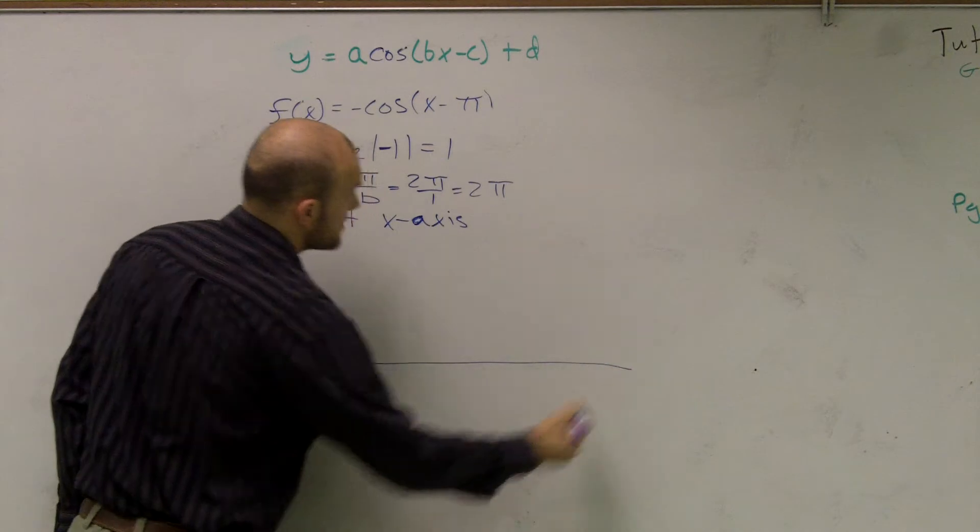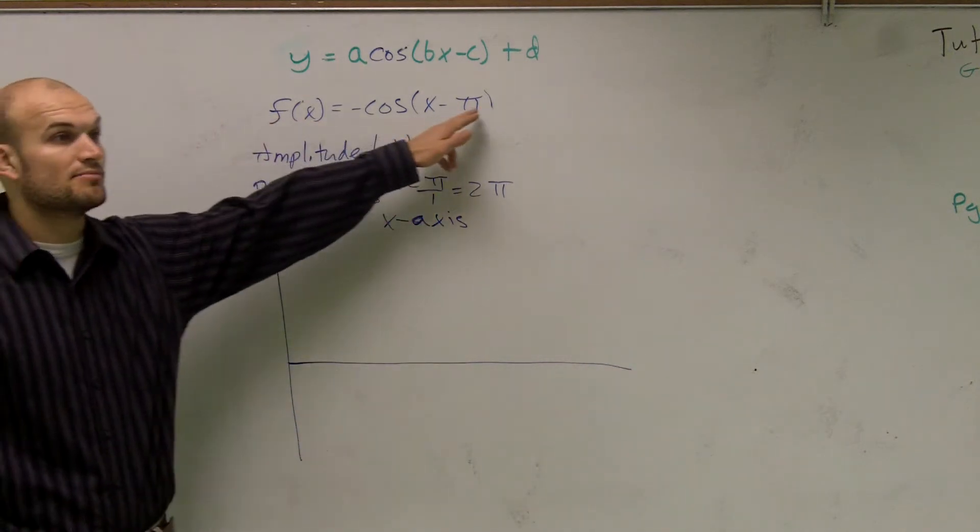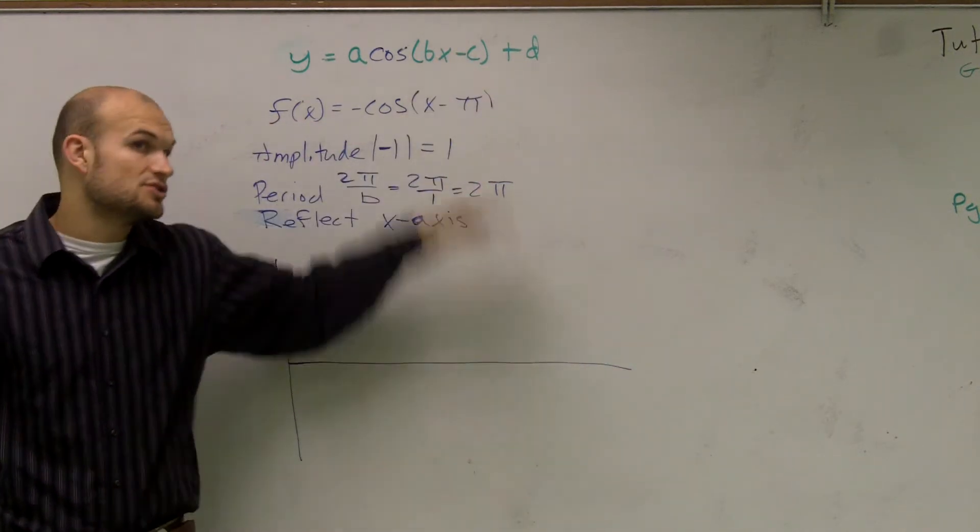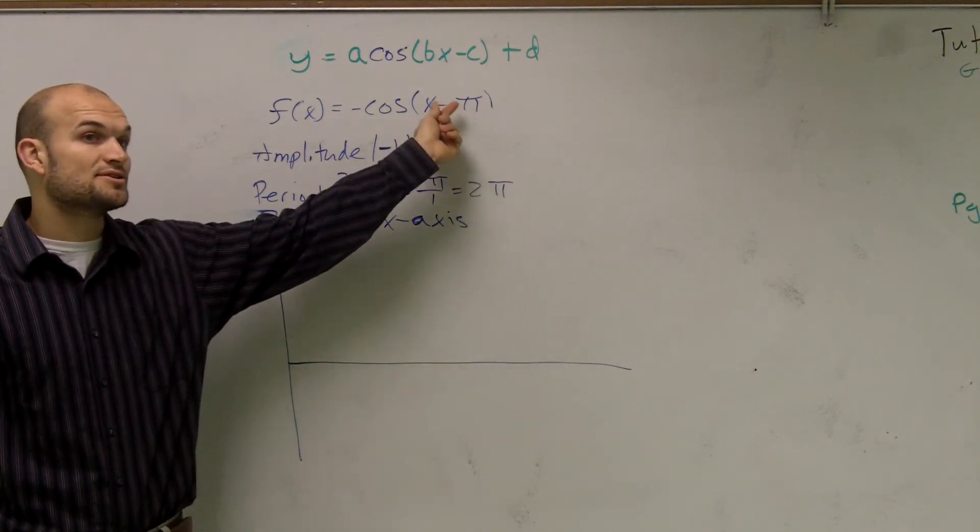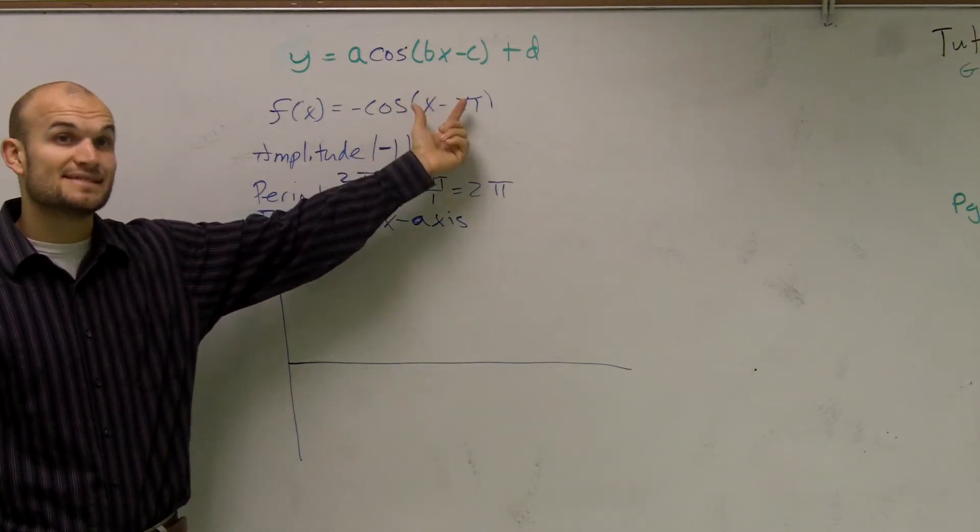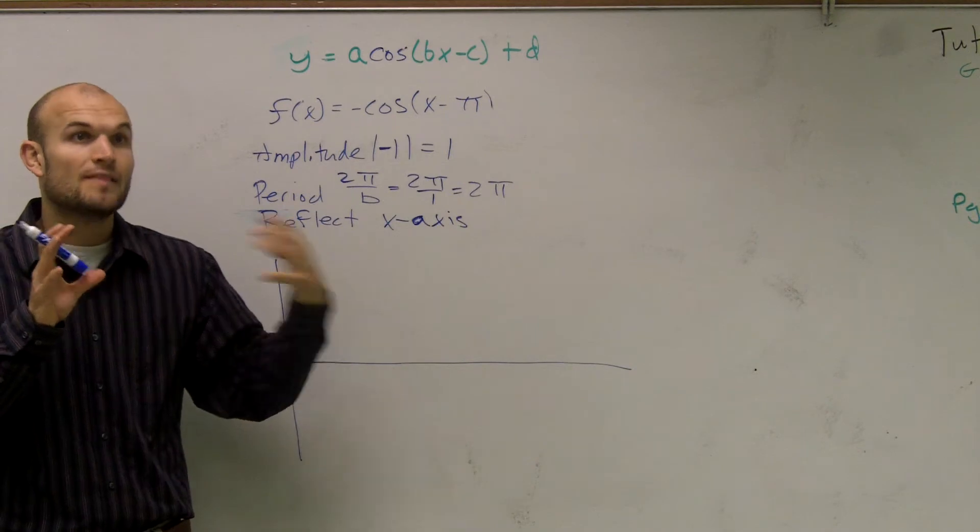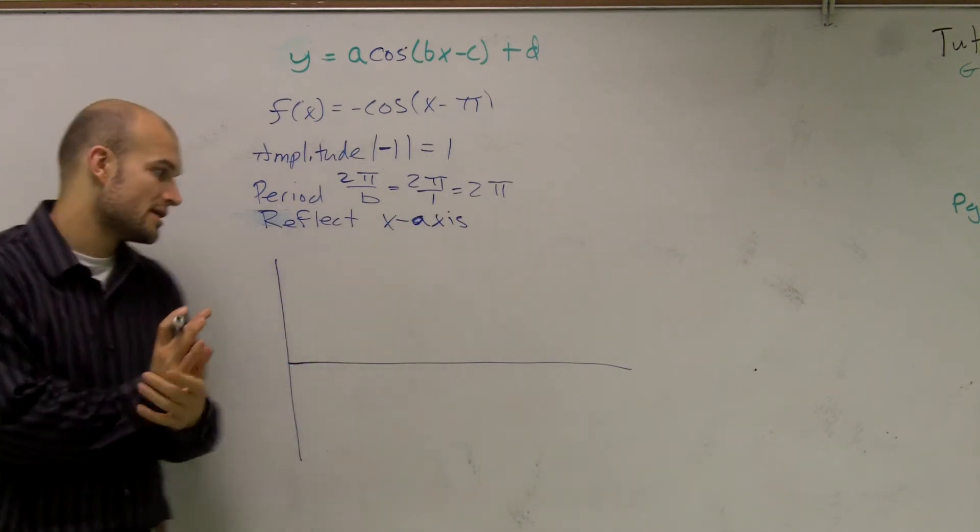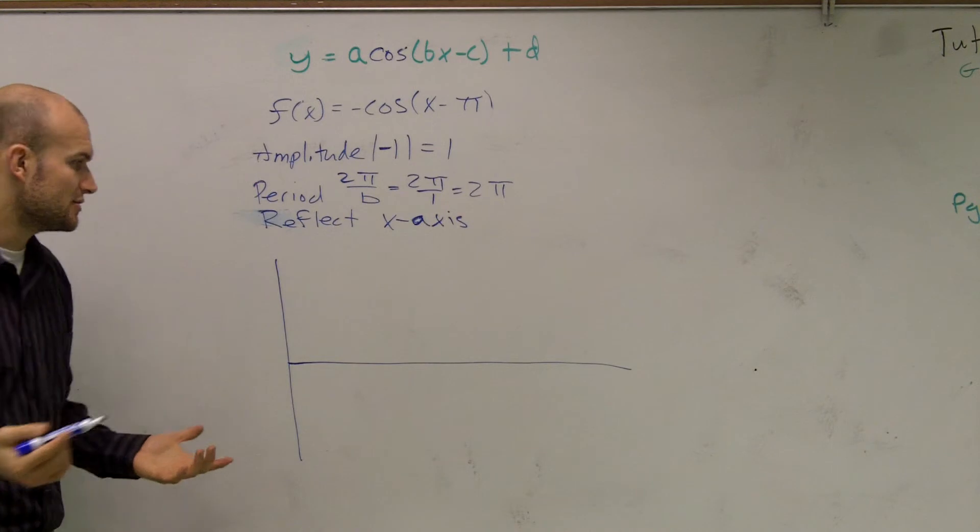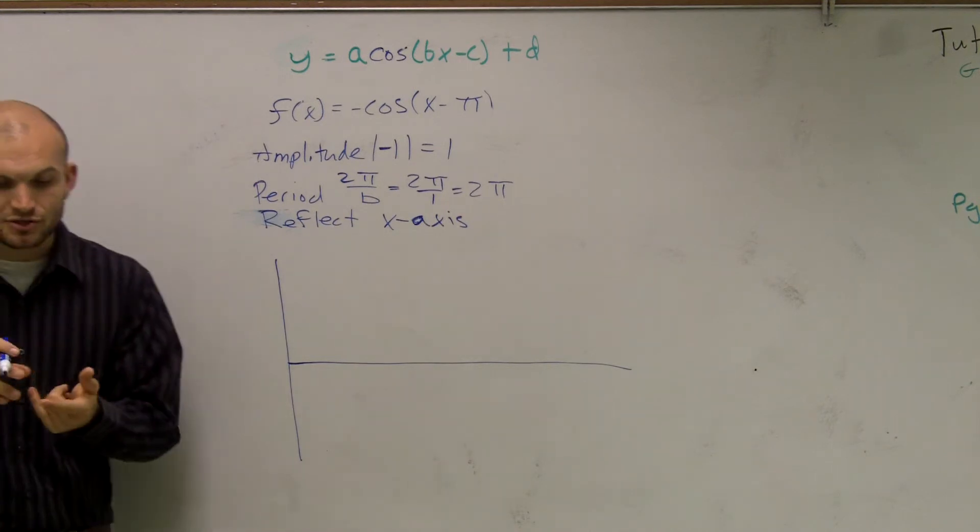Now on the last example, I showed you one where we had plus or minus outside of the function, right? And that showed us to do up and down. Now we have a minus, and it's inside the function because it's in the parentheses. That's going to tell us the shift left or right. So first thing we need to do is remember the same thing I told you.